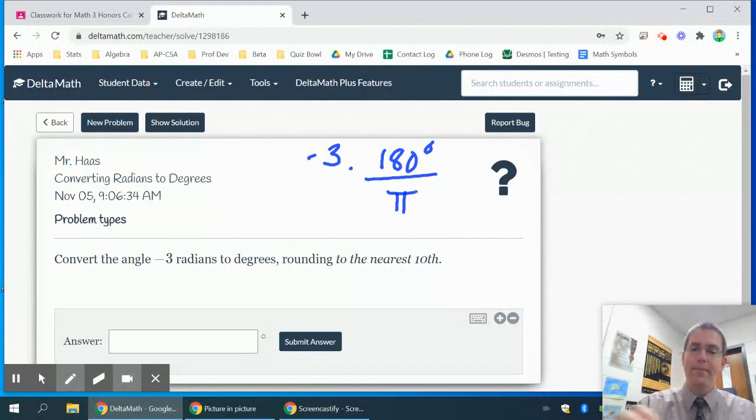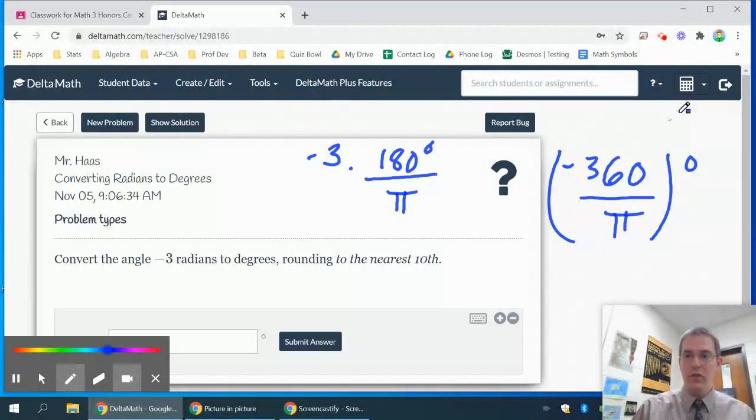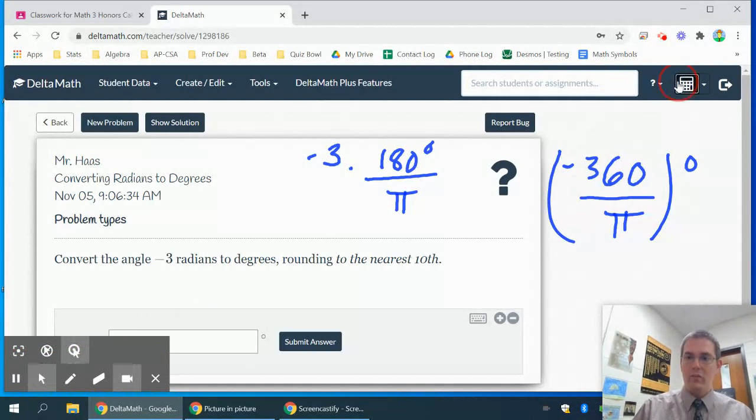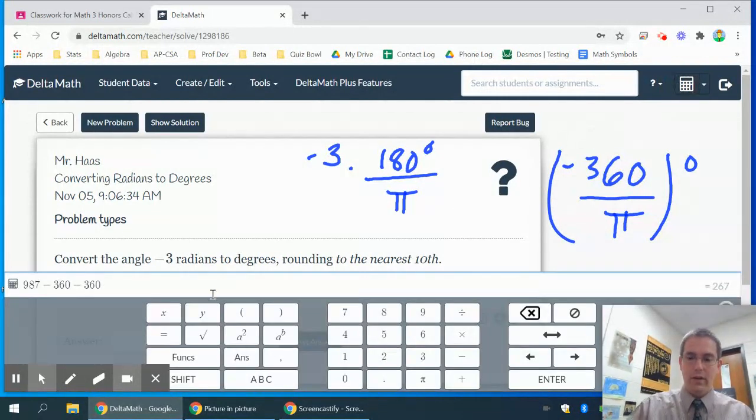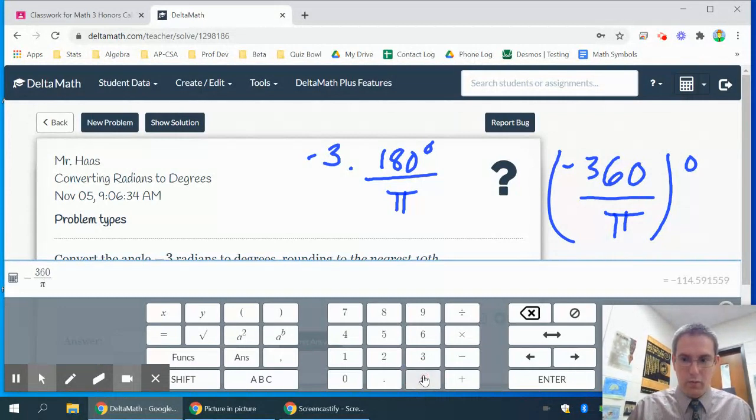And I'm going to multiply. Now when I multiply, I'm going to get negative 360 over π degrees. And it says it wants the answer to the nearest tenth. Well, there's not much to do except for to try the calculator.